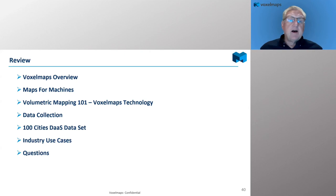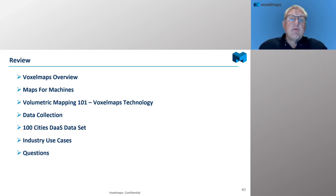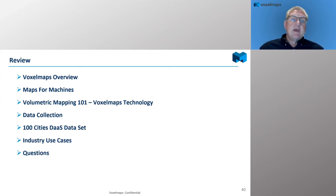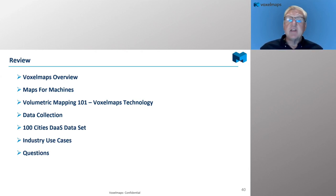So we've covered a lot today. Peter gave us a solid overview of VoxelMaps as a company and talked about the concept of maps for machines — think about that as you move forward: with everything going towards machine learning, is the data you're collecting really the right data that your machine needs? He then talked about volumetric mapping, our technology, the data collection network, and briefly discussed the 100 Cities DAS data set. I've given some overview of potential industry use cases — there are many more we'd love to talk to you about.